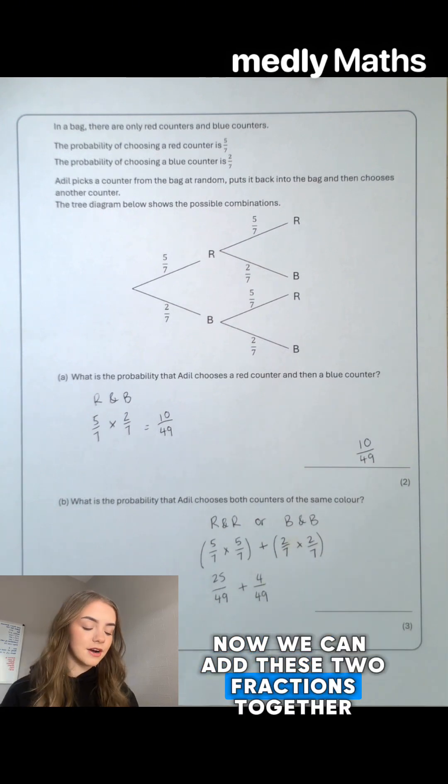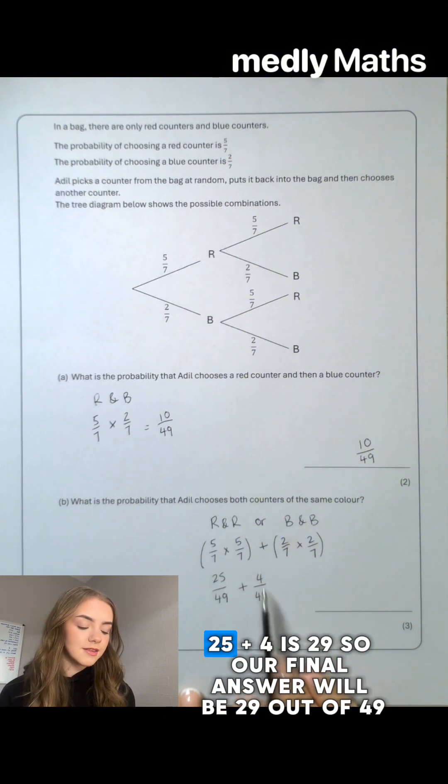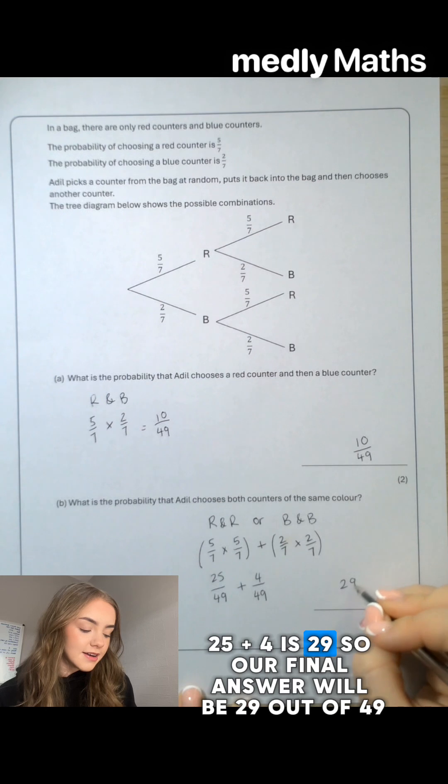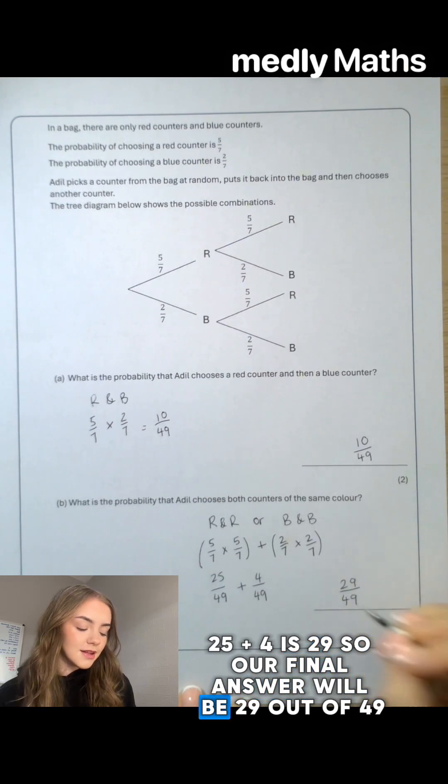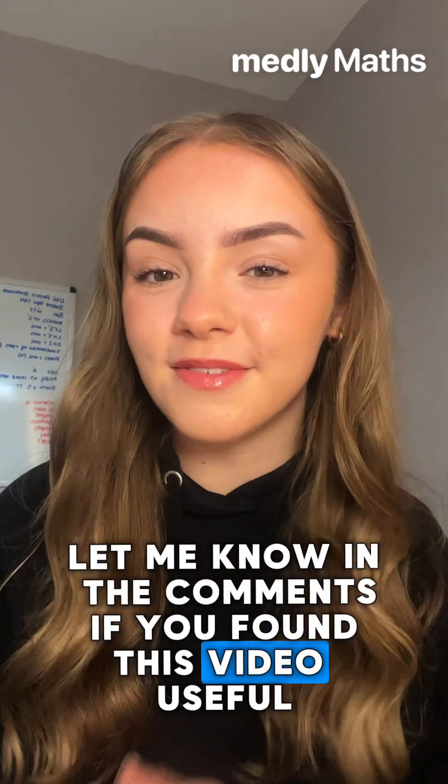Now we can add these two fractions together. So we have the same denominator which means we can just add our numerators. 25 plus 4 is 29. So our final answer will be 29 out of 49. Let me know in the comments if you found this video useful.